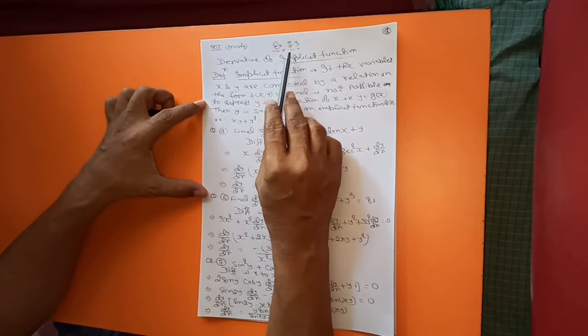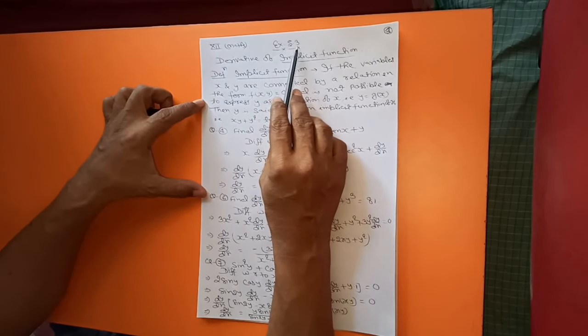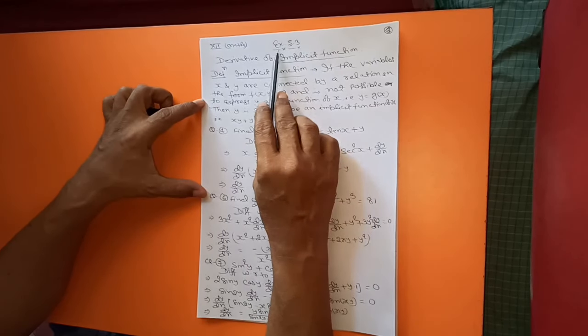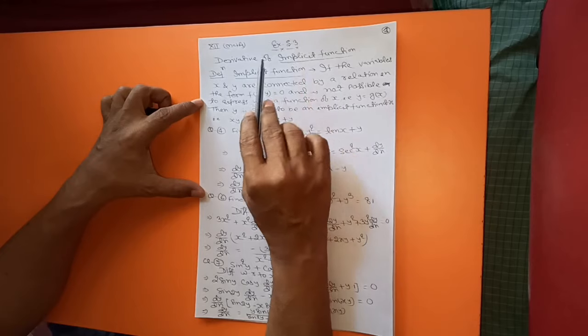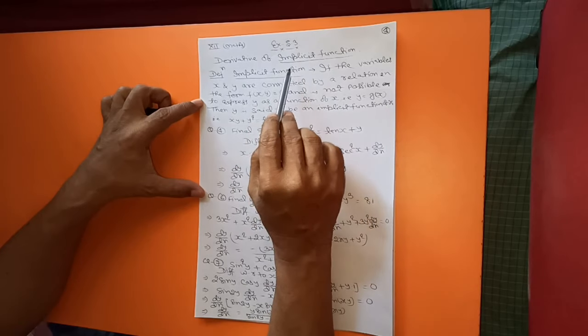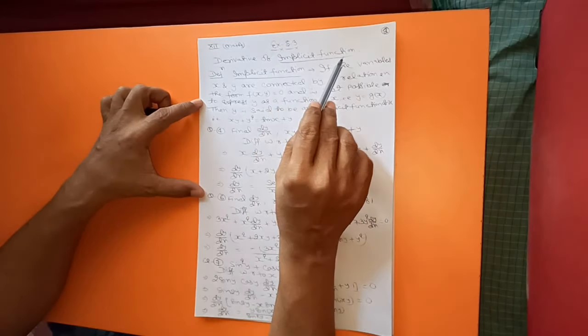Now we will start exercise 5.3, which covers differentiation of implicit functions.